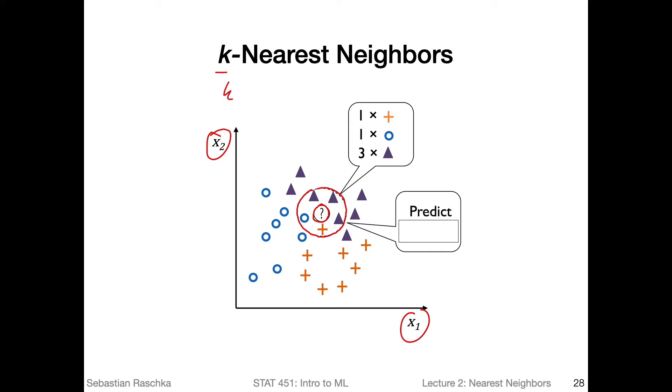Yeah, k is five here. So this is a five nearest neighbors model. I'm considering the five closest data points to the data point I want to classify. Here I should mention also, we have three different classes: we have these crosses here, we have these circles here, and we have these triangles here.